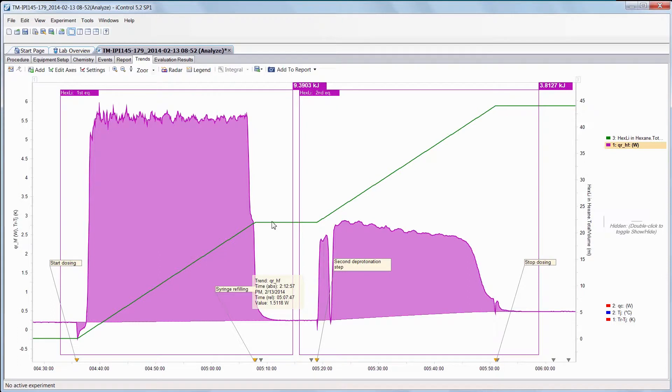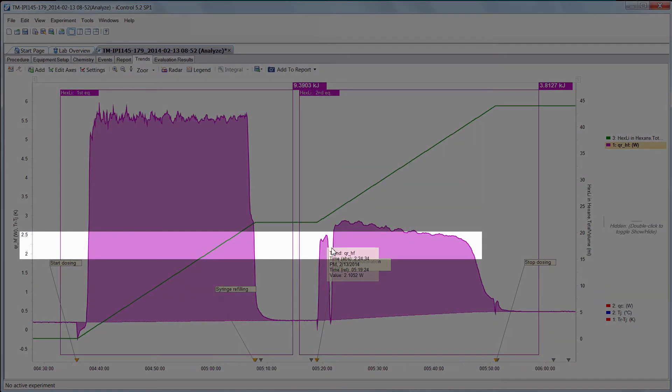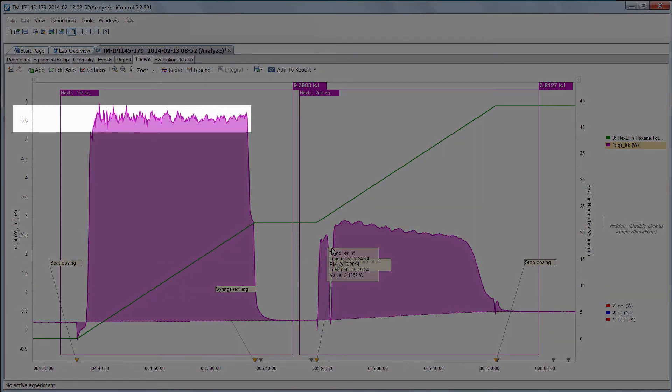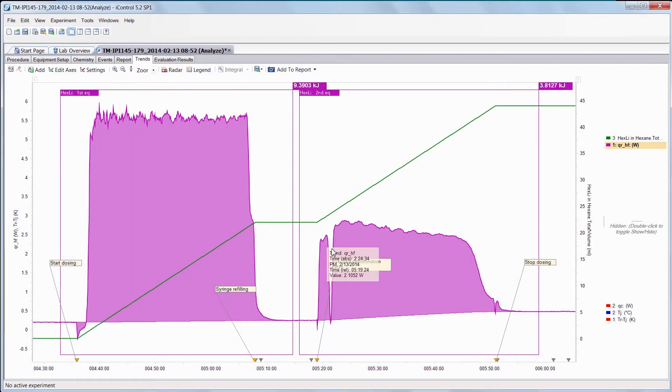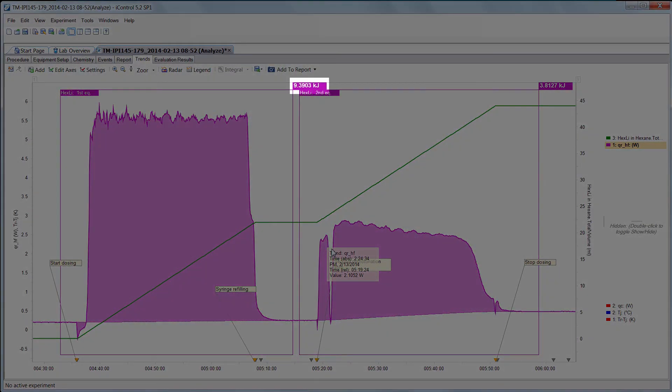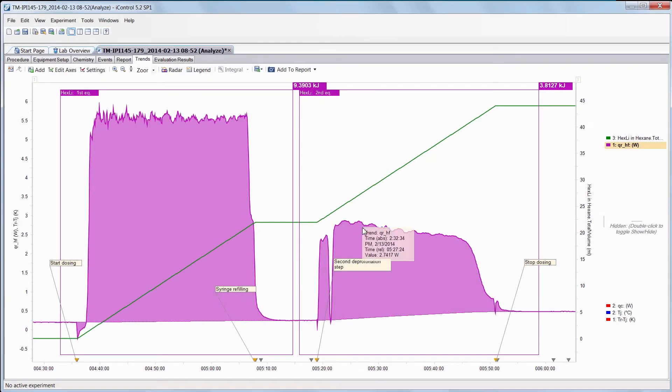The syringe refills and then starts adding the second equivalent of base, and you can see a second square wave where the amount of energy is actually about half what it was during the first deprotonation. You can see that by looking at the instantaneous heat profile: it's about 2.53 W of energy versus 5.5 W, and the overall heat was about 9 kilojoules versus about 4 kilojoules in the second deprotonation step.